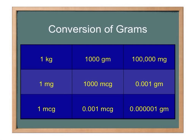Let's get started. In this lesson, we're going to talk about the conversion of different types of weights. Most of your medications are going to come in the form of grams. Sometimes you'll see them in milliequivalents or something similar. If you can think about the prefixes — a milliequivalent is very similar to a milligram when you're converting different measurements of weight.